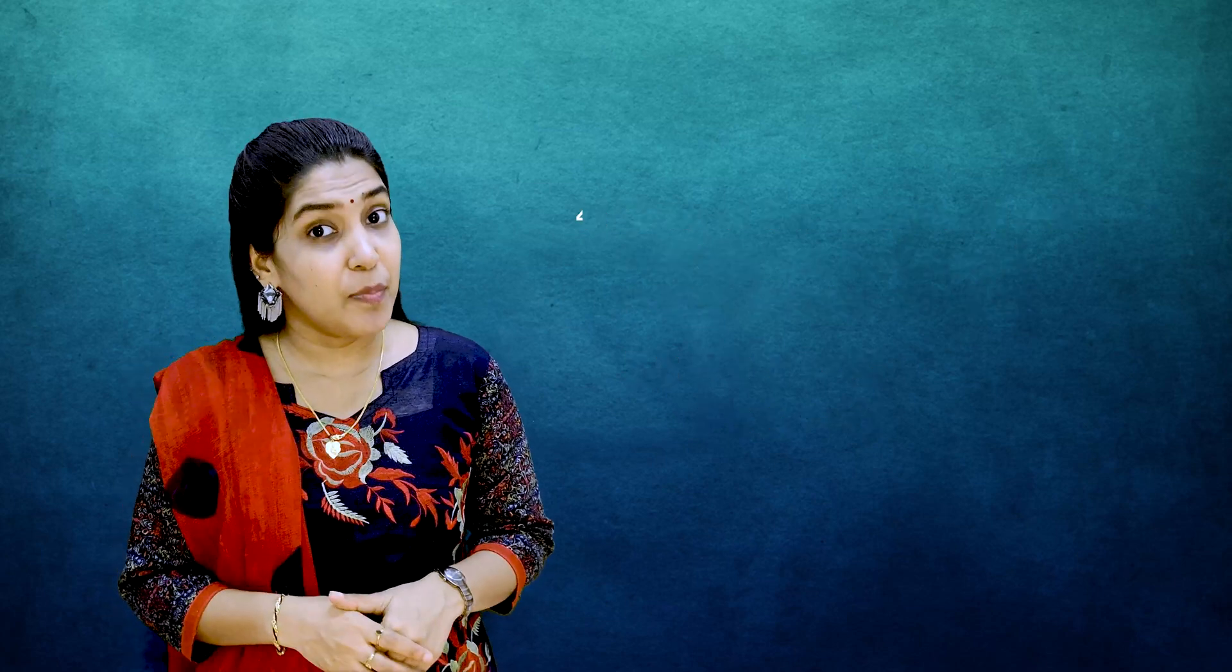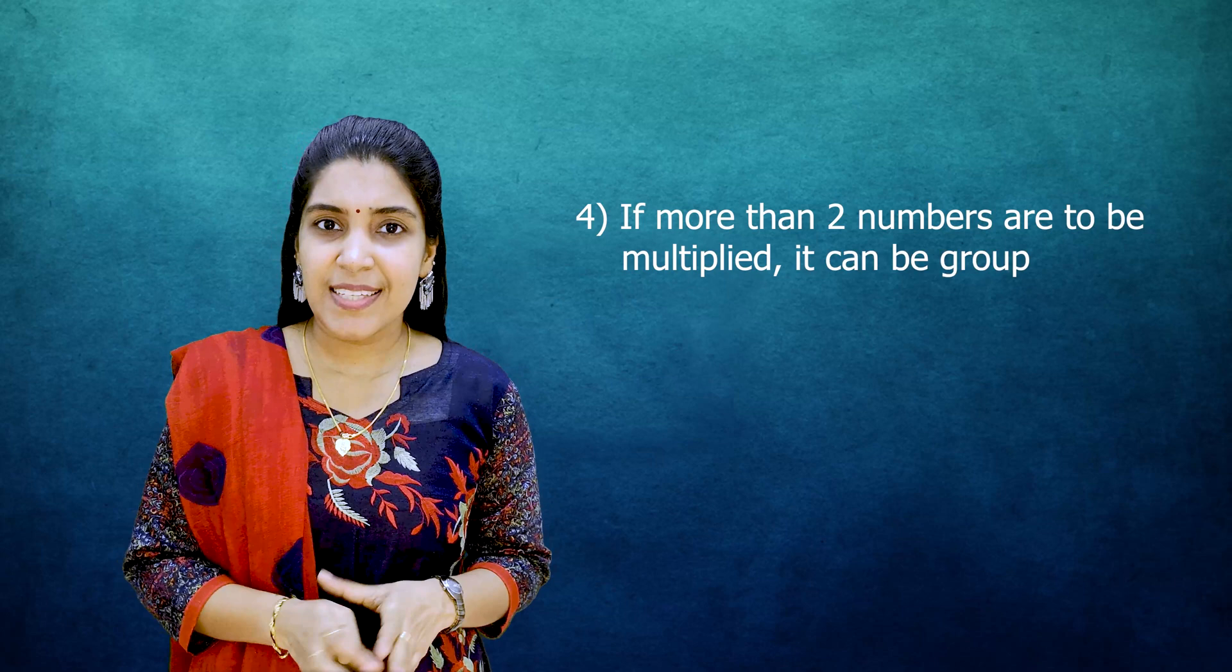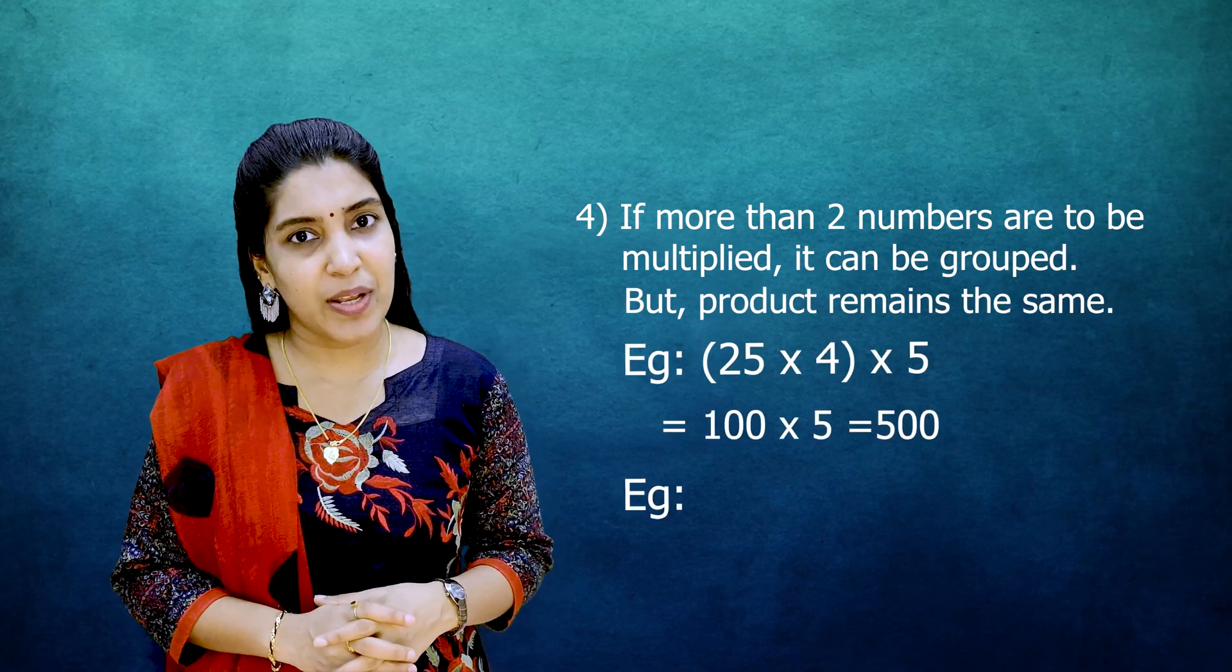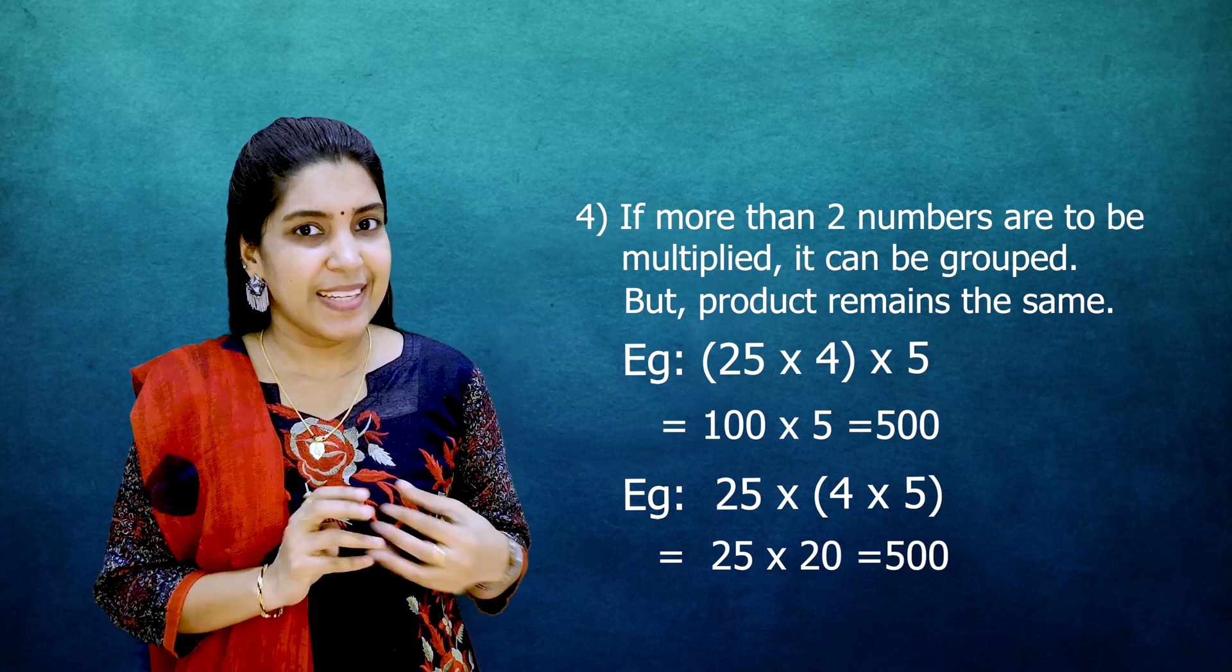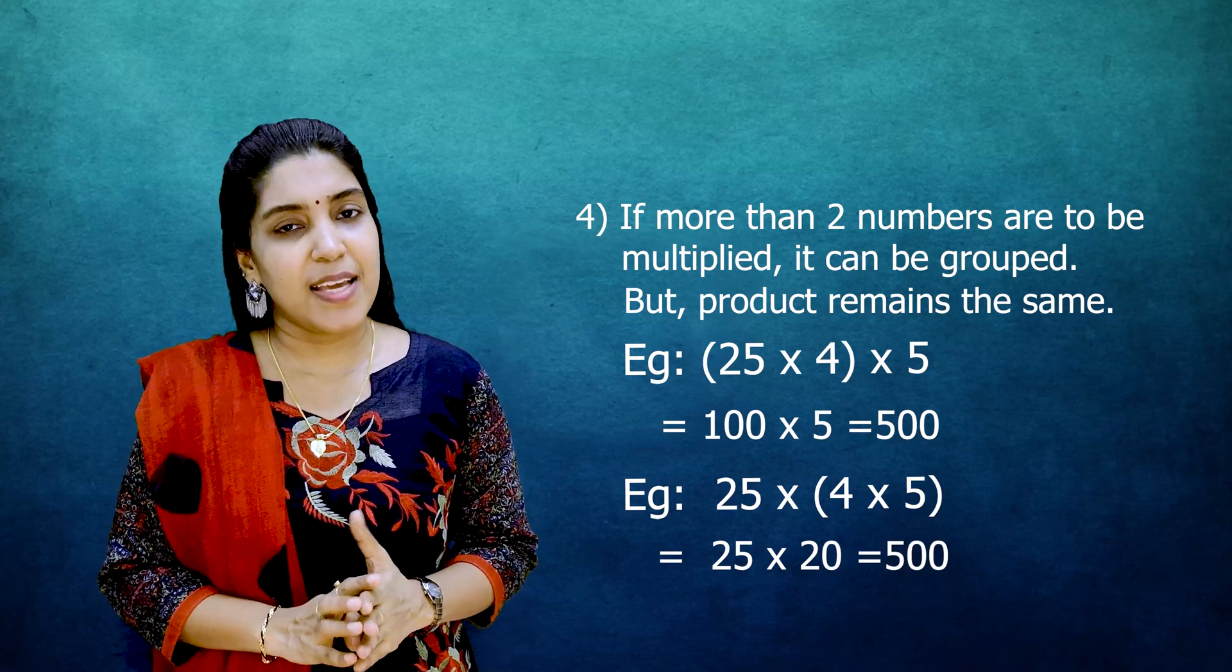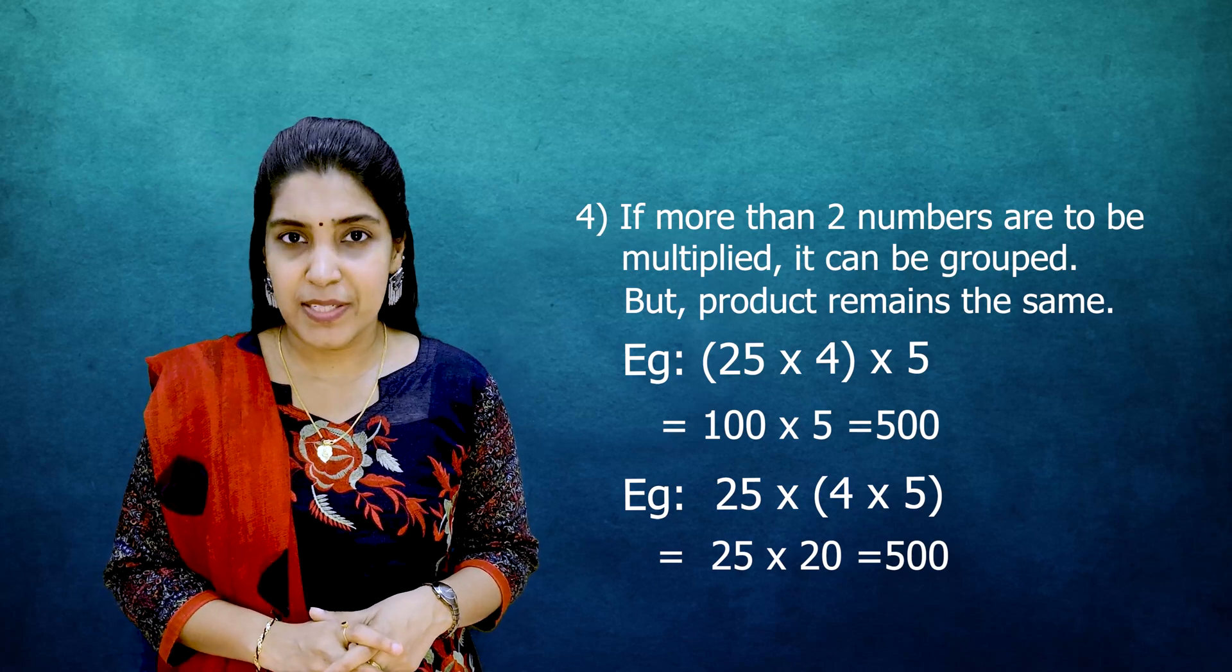Fourth property: more than 2 numbers are to be multiplied, it can be grouped. There will not be any change in the result, and the result will be the same. Here are the examples. So these are the important properties of multiplication.